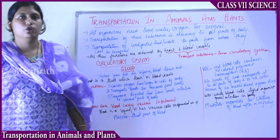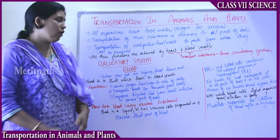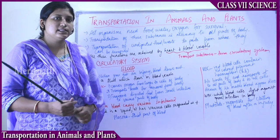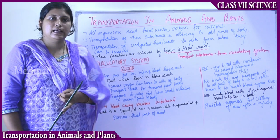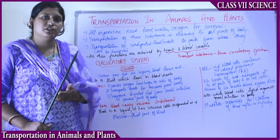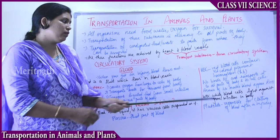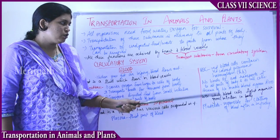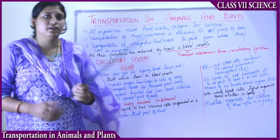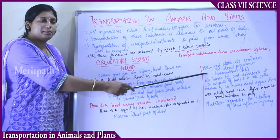The function of hemoglobin is to bind oxygen (O₂) and transport it to all cells of the body. So RBCs are blood cells, red in color, containing a pigment called hemoglobin. The presence of hemoglobin makes the blood appear red.